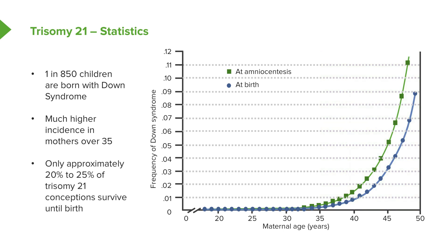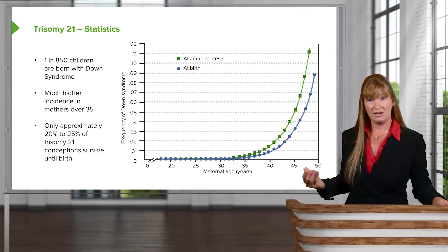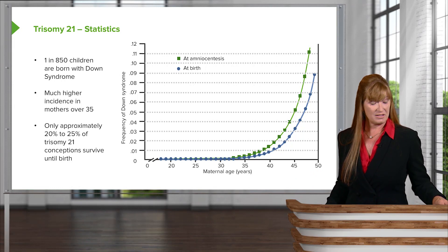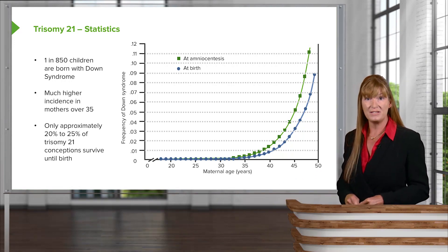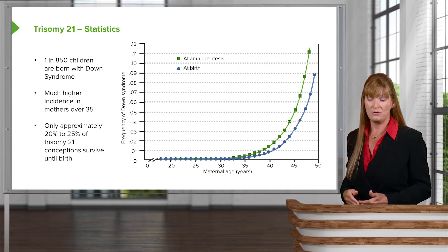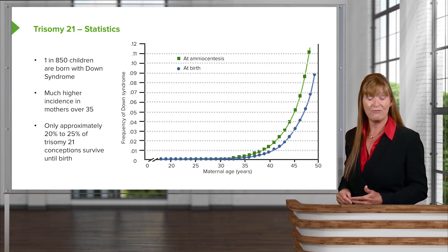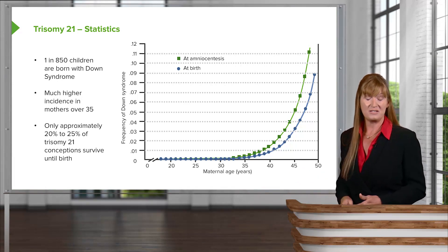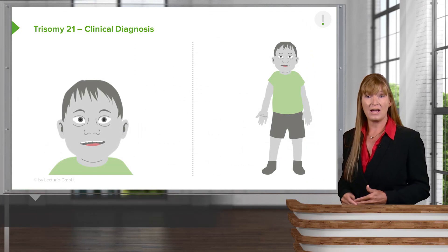Interestingly, with the systems of checks and balances, our body will spontaneously miscarry most abnormal chromosome situations. They say only about 20% to 25% of Down syndrome conceptuses actually make it to birth, so the systems in general are working. Trisomy 21 is one of the more common ones and does persist and survive through middle life into the 30s, perhaps even 40s and further as our medical systems advance.